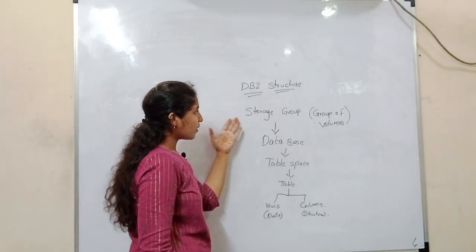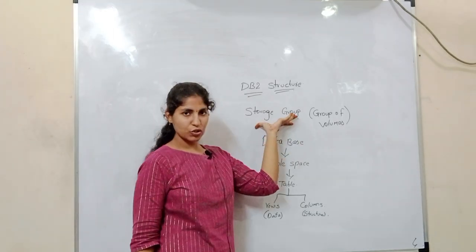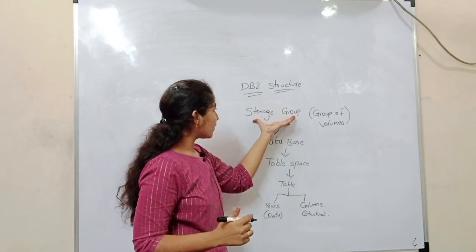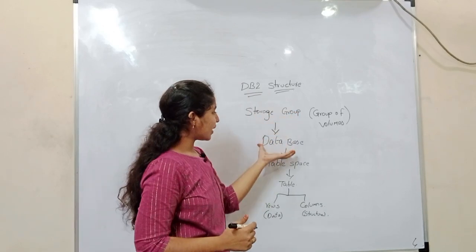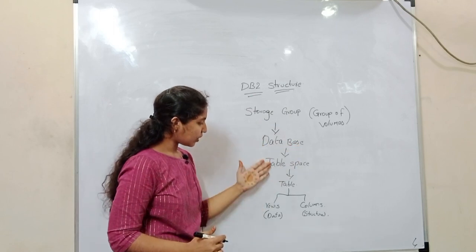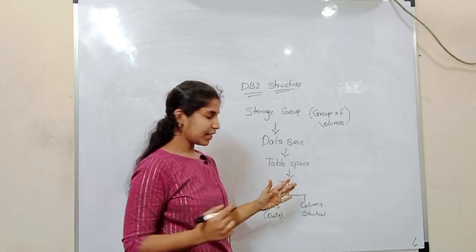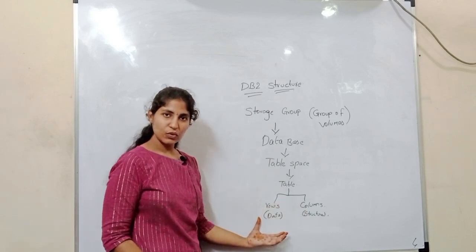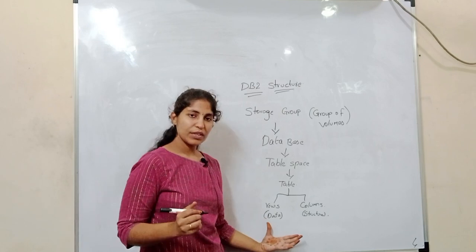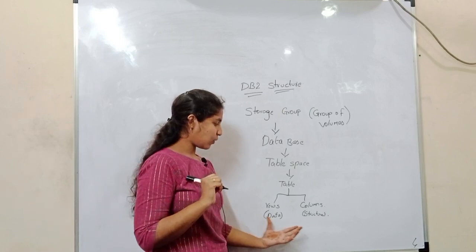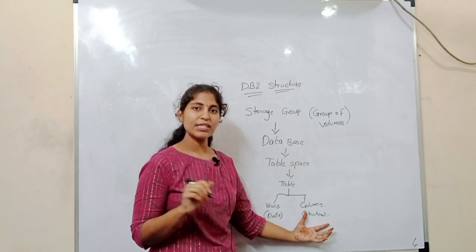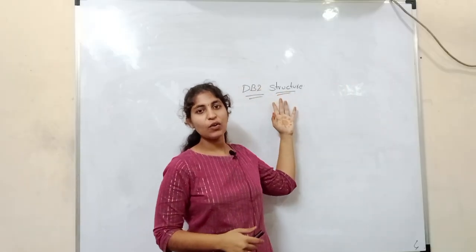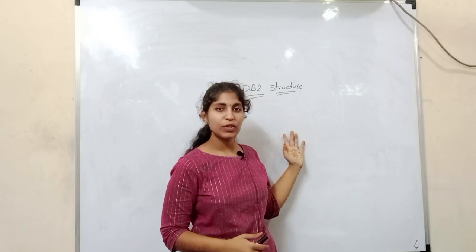In the DB2 structure, first it takes the data from storage groups — we store the data in volumes. From those volumes we take the data into the database, where we store the data in table format. In tables we have rows and columns — rows represent the data, and columns tell the structure of the data. So far we have discussed the DB2 structure theoretically, and now I'm going to show the diagrammatic representation.